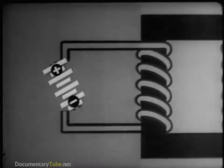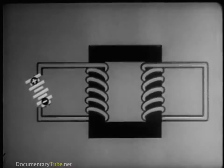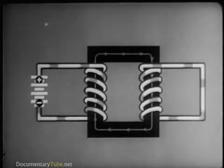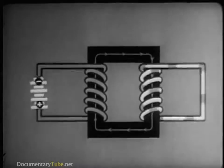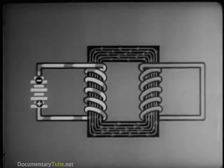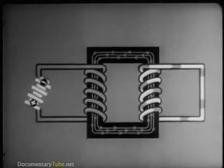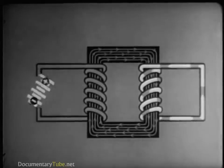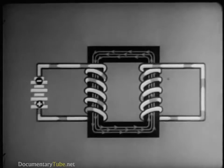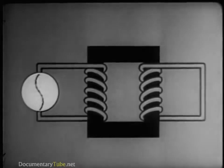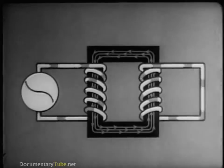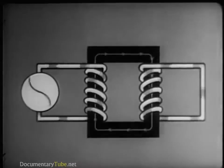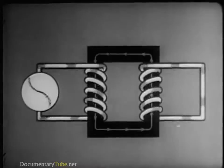Now let's consider alternating current. We'll first give you an idea of how it works by sending direct current through the coil first in one direction then in the other. Notice that the induced current in the second winding reverses each time the supply current is reversed. Now let's speed it up — the two currents begin to resemble each other. By replacing the battery with an AC generator we get a true alternating current, which is reproduced almost exactly in the second winding. This is the second important fact about a repeating coil: it repeats alternating current practically unchanged.